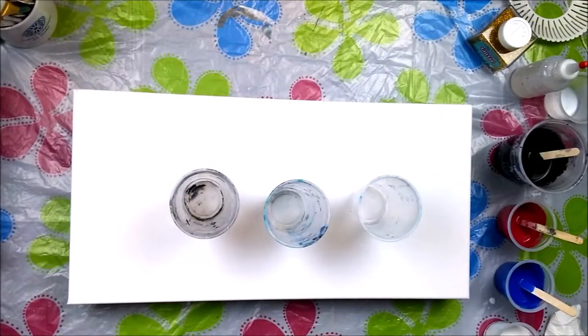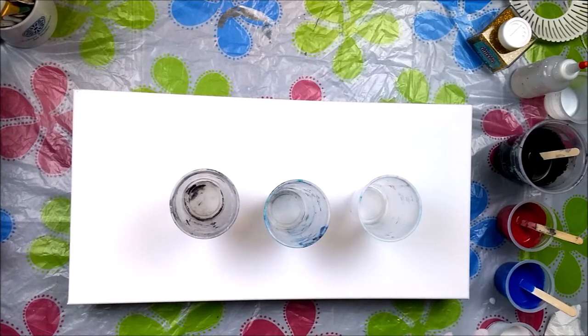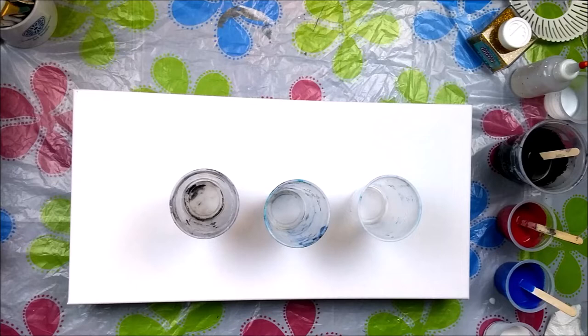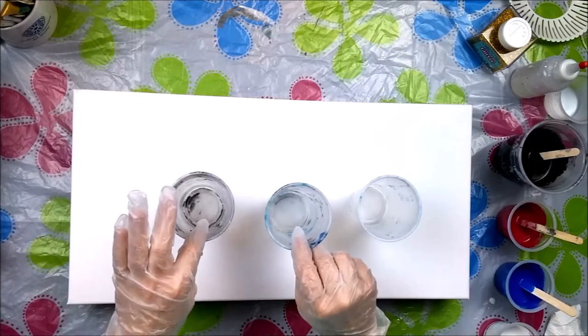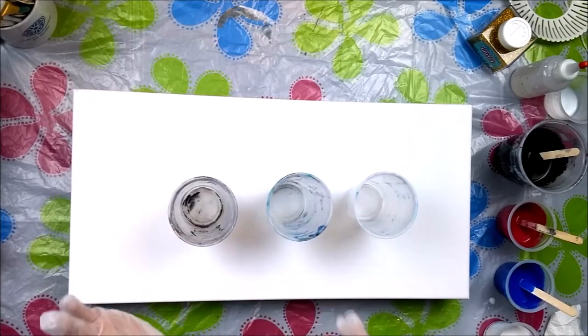Hi everyone, it's Dawn. Welcome to today's pour. Today I had the idea that I would do a triple bi-color tree ring pour on this 10 by 20 canvas, so I've got my recycled cups here and I want to mix white and black for one pour.